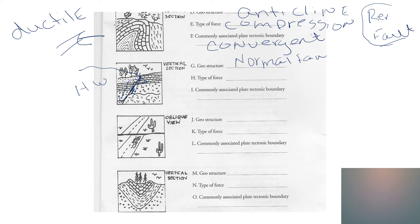The type of force: that's what happens when we have rocks that are pulled apart, so the force is tension — the rocks are being stretched and breaking. The commonly associated plate boundary is divergent.